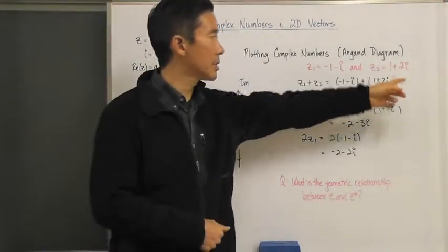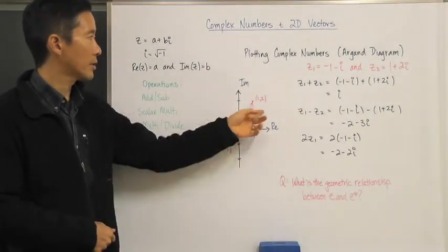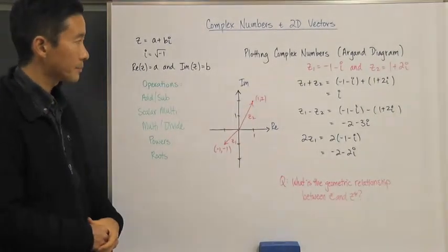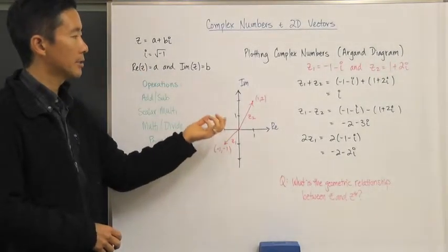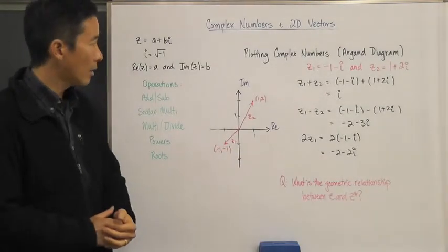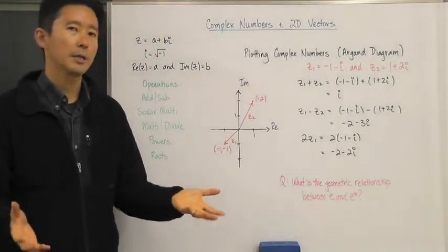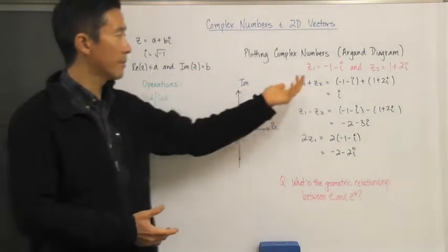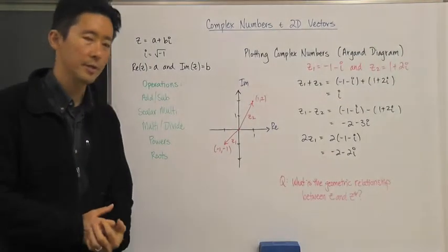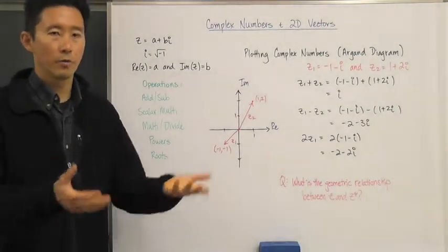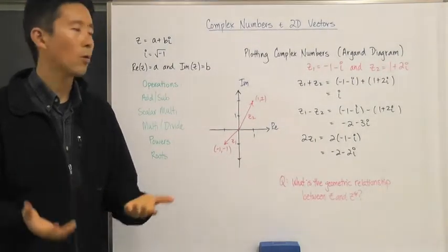Same thing with z sub 2, which is one plus two i. Notice that is going to be in the first quadrant of the Argand diagram. Now being that we have a geometric vector, two-dimensional vector interpretation of complex numbers, we now can go ahead and associate the geometric interpretation to the sum of vectors, the difference of vectors, as well as the scalar multiplication of vectors, in exactly the same way that we've done for vectors in the real rectangular coordinate system.